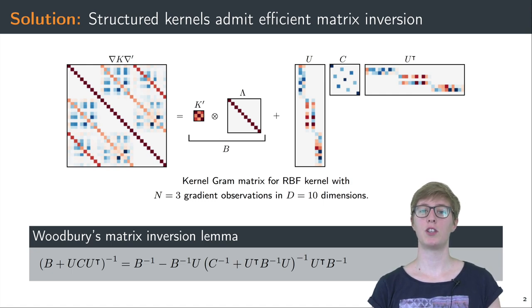This decomposition is beneficial to use together with a matrix inversion lemma. Instead of inverting a d n by d n matrix on the left, we now only need to invert a Kronecker product with an n by n, that's k here, and a d by d matrix that is typically diagonal for the RBF kernel, that's the length scale matrix here.